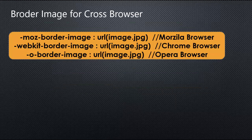For cross-browser support: if you are using Mozilla browser, use -moz-border-image. For Chrome, Safari, iPhone, or Android browsers, use -webkit-border-image. For Opera browser, use -o-border-image. These are the border-image vendor prefixes for cross-browser compatibility.